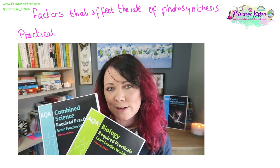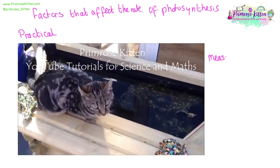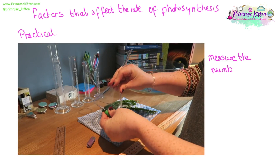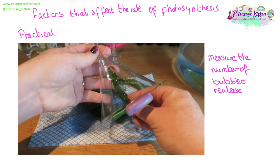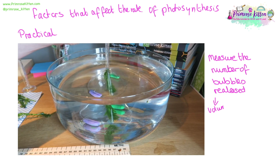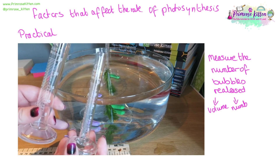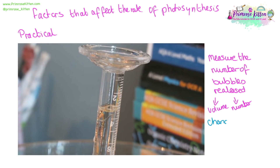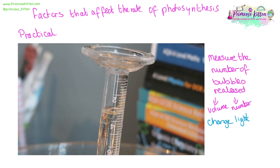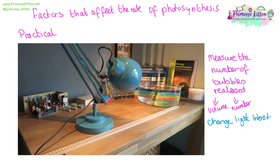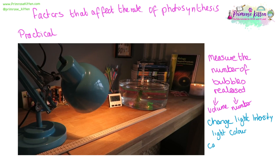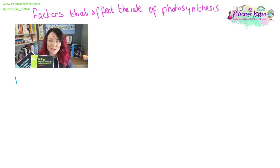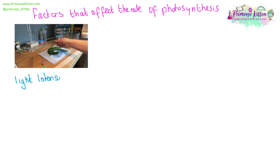There are a number of factors that affect the rate of photosynthesis, and we can look at this in a practical. We can measure the release of oxygen coming out of the photosynthesis equation — we can measure the number of bubbles coming out. There are two ways to do this: we can simply count the number of bubbles, or we can use a measuring cylinder to measure the volume of bubbles. You can change the light intensity by changing the distance of the lamp from the pondweed or algal balls. You can change the colour of the light, or you can change the concentration of carbon dioxide in the water. You need to know about the different factors that affect the rate of photosynthesis and be able to recognise and draw the graphs.